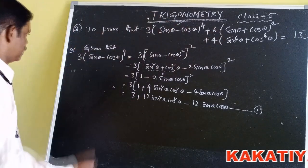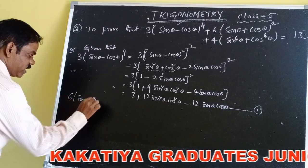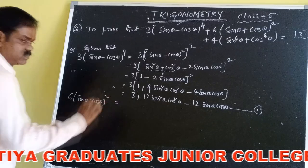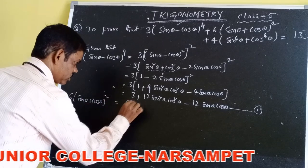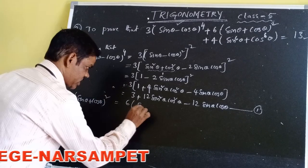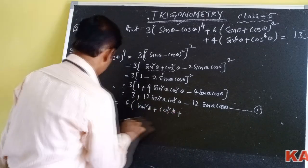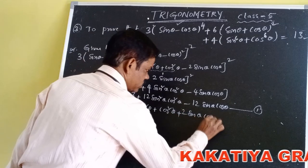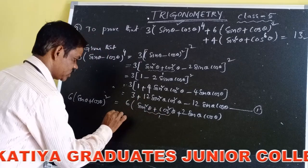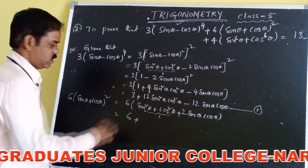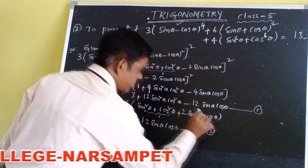The second term: 6(sinθ + cosθ)² = 6[sin²θ + cos²θ + 2sinθcosθ]. Since sin²θ + cos²θ = 1, this equals 6(1 + 2sinθcosθ) = 6 + 12sinθcosθ. Let us consider this as equation number 2.